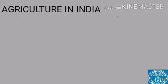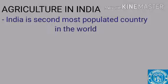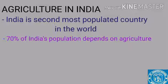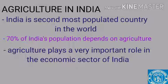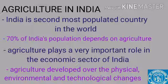As we all know, India is one of the most populated countries in the world after China. With 1.3 billion population in the country, about 70% of the Indian population depends on agriculture for their livelihood. And thus agriculture plays a very important role in the economic sector of India. Agriculture is an age-old practice which was developed over the years with physical, environmental and technological changes.